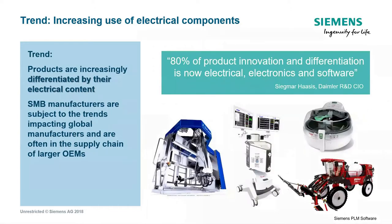Products are increasingly being differentiated by their electrical content. The Daimler R&D CIO states that 80% of product innovation and differentiation is now electrical, electronics, and software. Electric vehicles now feature autonomous driving capabilities. Machinery is becoming more advanced and moving toward the IoT world. Medical devices are becoming more advanced, and even consumer goods like fridges and microwaves are incorporating more electrical intelligence.